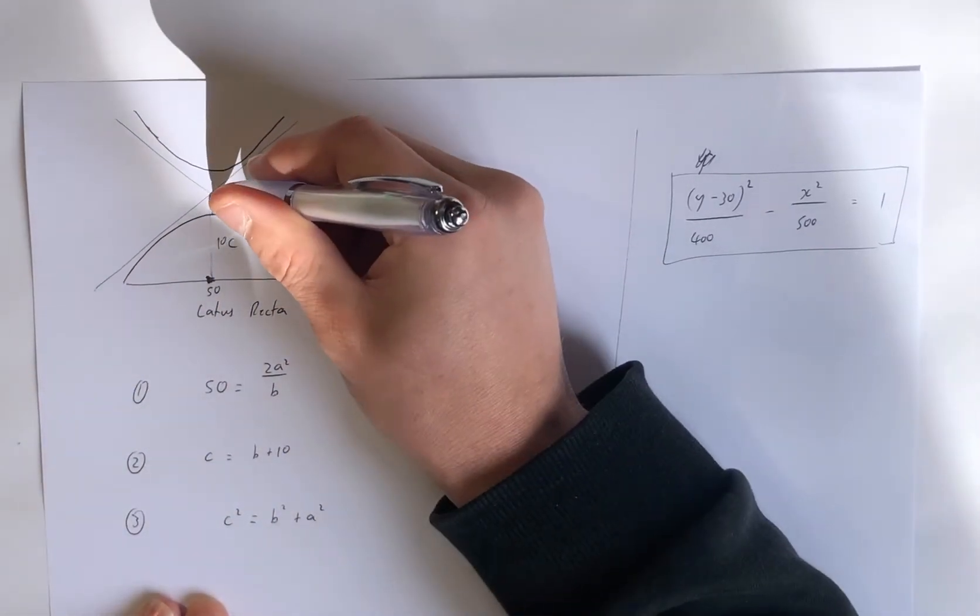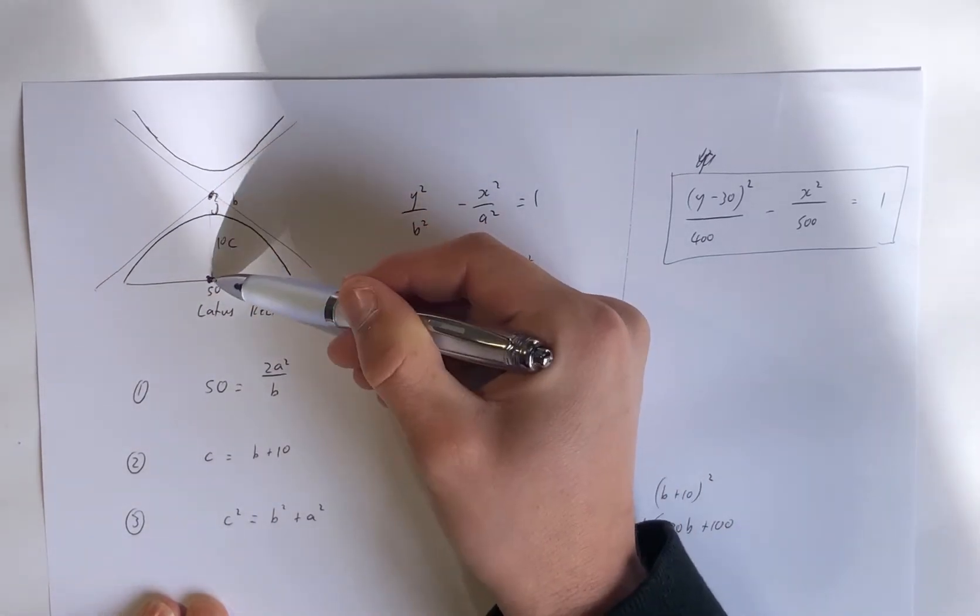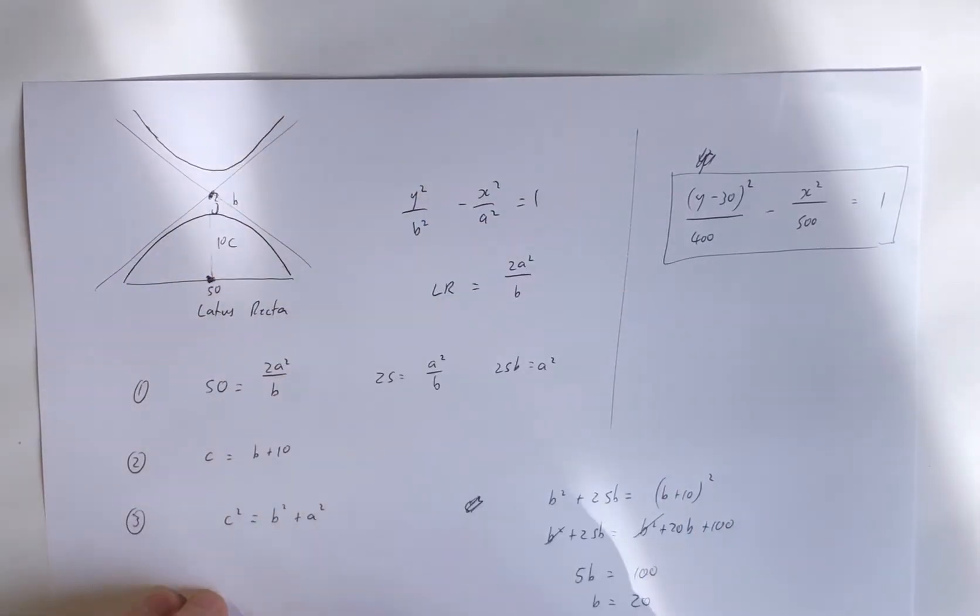You then use that. The fact that the distance from the centre to the focal point, which is c, is that distance b from the centre to the vertex, plus the rest of that distance. Right. We know that was 10, because that's the height of the roof. So there we have it.